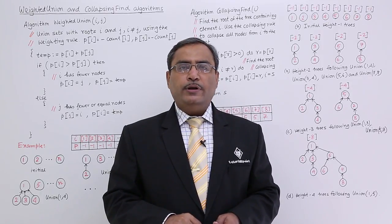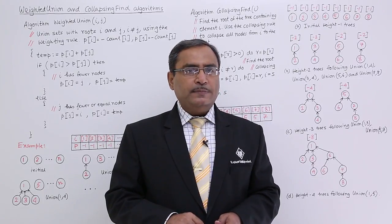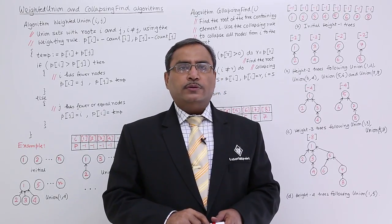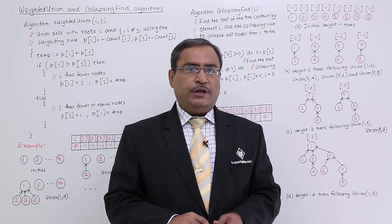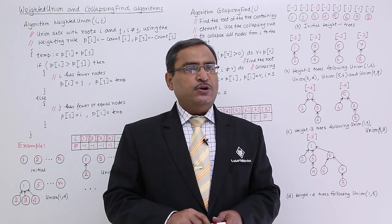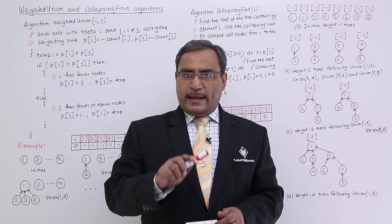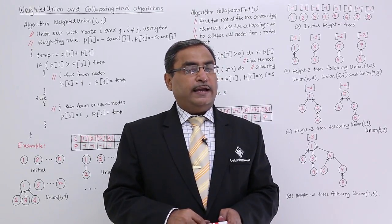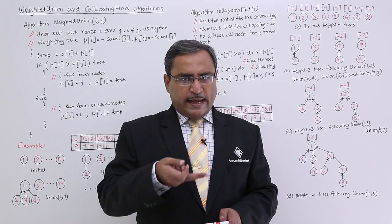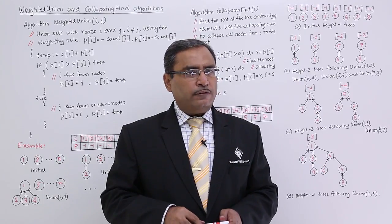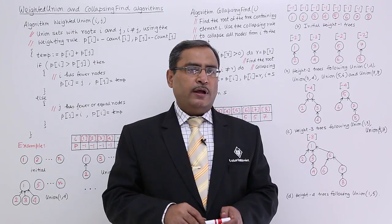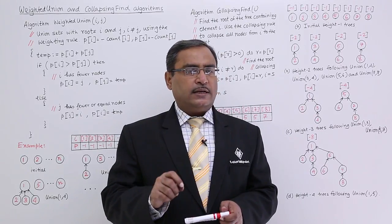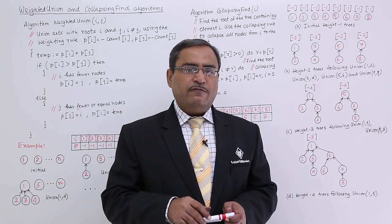In the previous session we had our simple union and simple find and we found some problems with that. In the case of simple union, when we went to do union(1,2), then union(2,3), then union(3,4), up to union(n-1, n) for n disjoint sets, the resultant tree became a degenerate tree — each level had a single node. When we ran find(1), find(2), find(3), find(4), the total complexity became O(n²). Please watch that previous video as this one is a continuation.